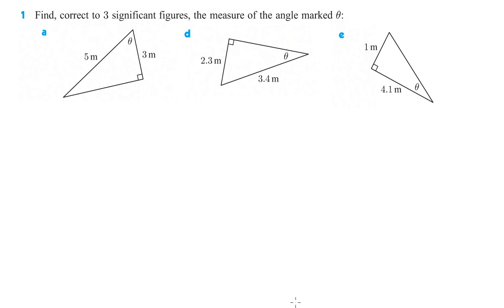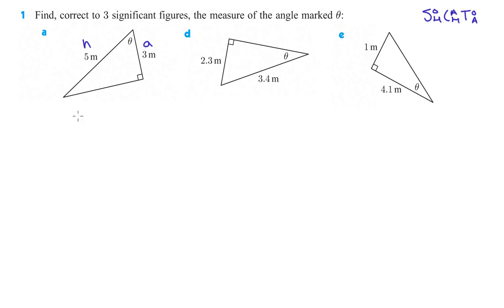Let's have our good friend SOHCAHTOA help us out with some of these. From this angle, this is the hypotenuse, and this is adjacent. So hypotenuse and adjacent is cosine.